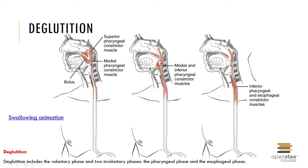The buccal phase is voluntary. The pharyngeal phase is involuntary — the autonomic nervous system kicks in. The autonomic nervous system continues to control the esophageal phase as well.